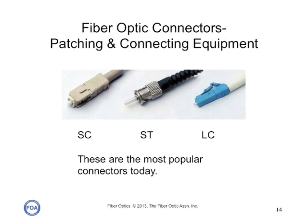We also need temporary ways of joining fiber for patching cables together and for connecting equipment, and for that we use connectors. These are the most popular connectors: the beige connector on the left is an SC; the metal connector in the middle with a bayonet locking nut is an ST; and the push-pull locking connector, the very small one on the right, is an LC. These are the connectors you will see most often in the marketplace.